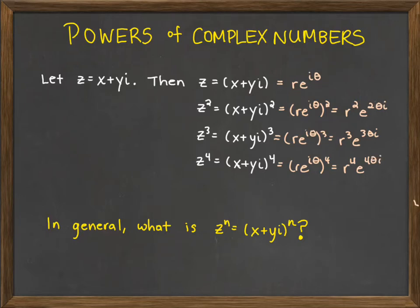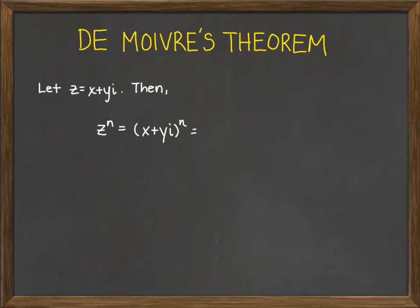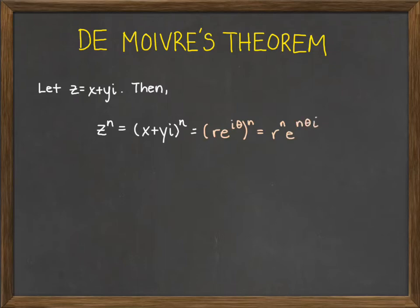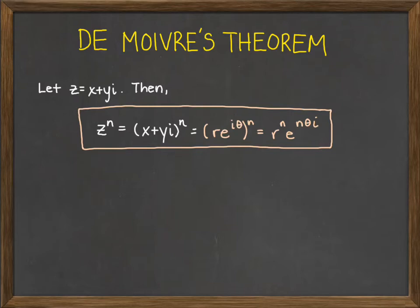A pattern emerges: when we squared z we got r squared e to the 2θi, and for z to the fourth we got r to the fourth e to the 4θi. So in general, what can we say about z to the n? This leads us to De Moivre's theorem — De Moivre's is French — which states that z to the n equals re to the iθ to the n, given by r to the n times e to the nθi.